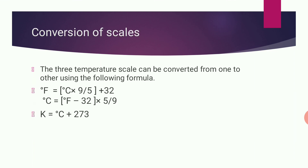Next, conversion of scales. We have two different formulas: Fahrenheit equals degree centigrade multiplied by 9/5 plus 32, and degree centigrade equals Fahrenheit minus 32 multiplied by 5/9. Similarly, Kelvin equals degree centigrade plus 273, and degree centigrade equals Kelvin minus 273. These are the two formulas you have to learn. And now I am going to end my session till here.